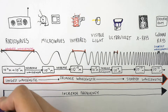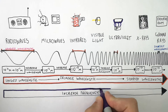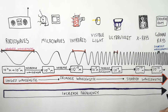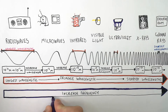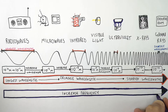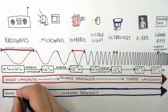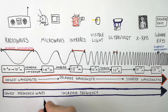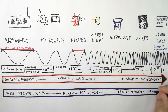But as you decrease the wavelength, you're going to increase the frequency. So as you move down the electromagnetic spectrum from radio waves down to gamma rays, you're going to increase the frequency of the waves. Radio waves have the lowest frequency but the longest wavelengths, and gamma rays have got the shortest wavelengths but the highest frequency.